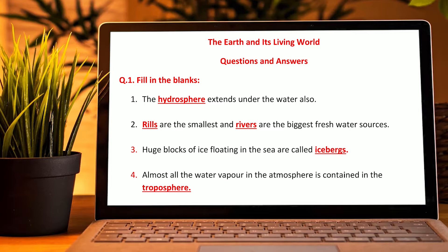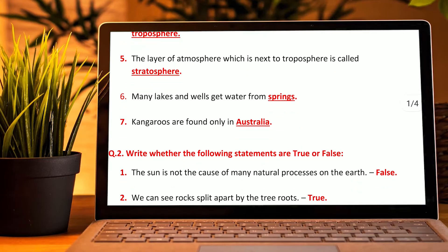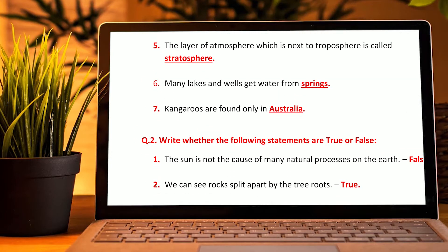The hydrosphere includes water found under the water as well. Rills are the smallest and rivers are the biggest fresh source of water. Huge blocks of ice floating in the sea are called icebergs. Most of the water vapour in the atmosphere is contained in the troposphere. The layer of atmosphere which comes after the troposphere is called the stratosphere. Many lakes, wells, and springs form from water sources.